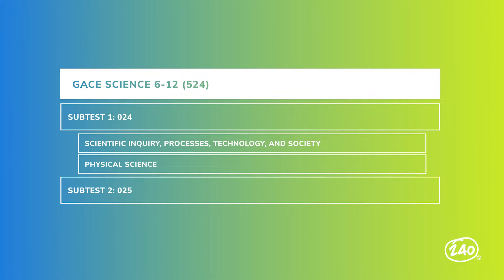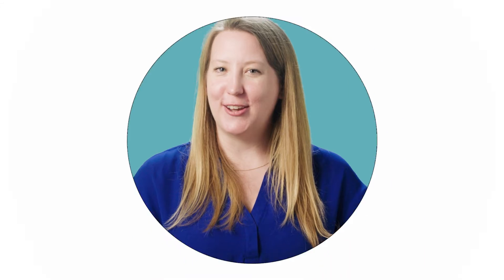Let's move on to the second part of subtest one: physical science. We can break this subsection down a little bit further — here you'll find objectives on matter, chemistry, and physics. Let's start by taking a closer look at what you can expect to see in the matter objective. You'll need to know about the parts of an atom. Our study guide is full of videos that can walk you through this content and everything else you need to know for your test.